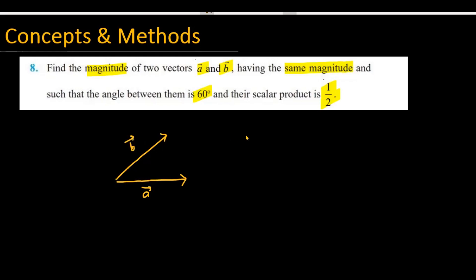The first condition is that |A| = |B|, meaning both vectors have equal magnitude. The second piece of information is that the angle between the two vectors is 60°.